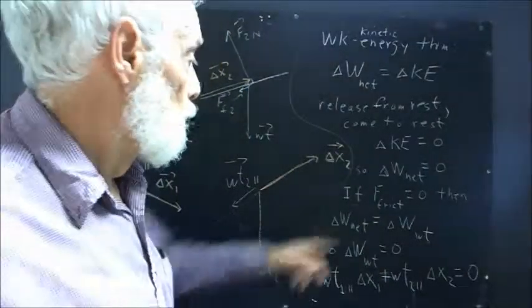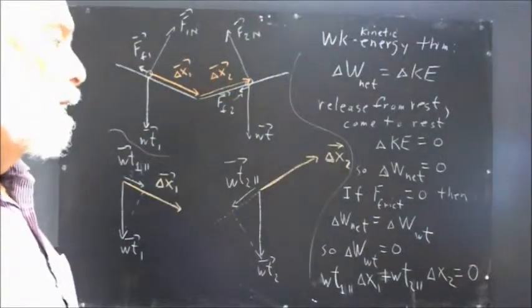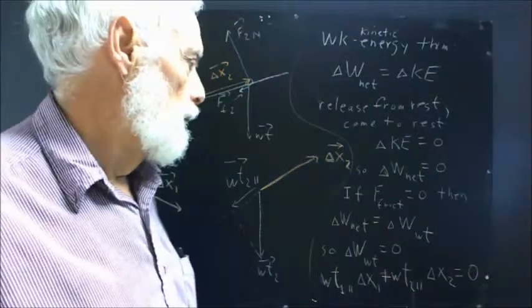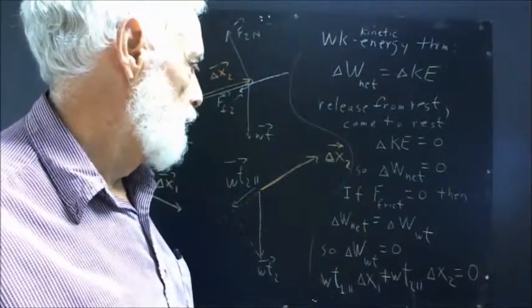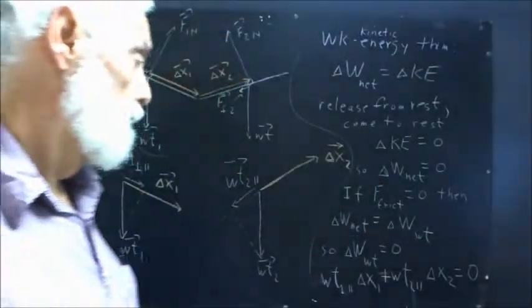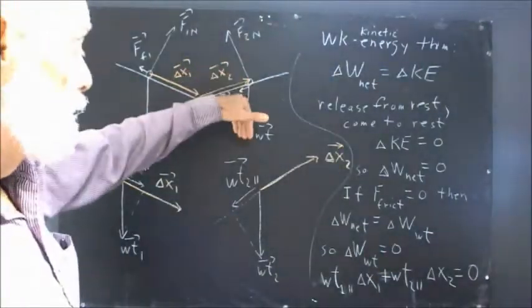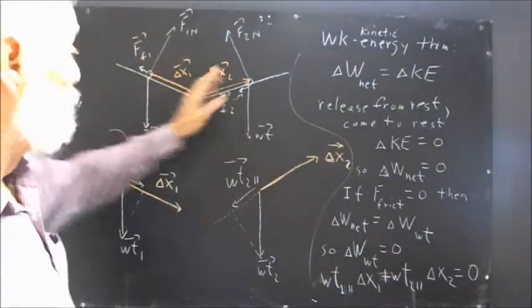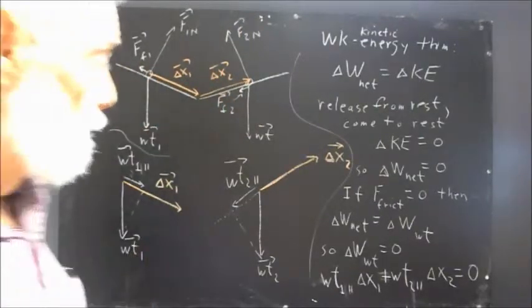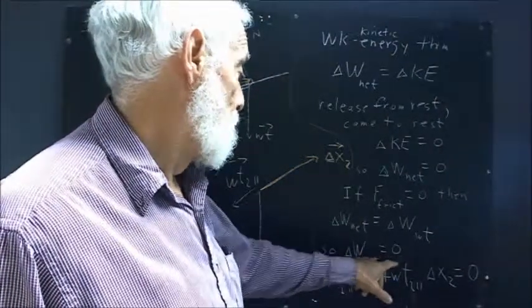Now, if the work done by friction, or if the force of friction is zero, that is for an ideal case where we have no friction, then the work done by the net force is just equal to the work done by the weight force. Because the weight force is the only force that does any work. Remember, the normal force being perpendicular to the displacement in both cases is always zero. So, the work done by the weight force, then, is zero.